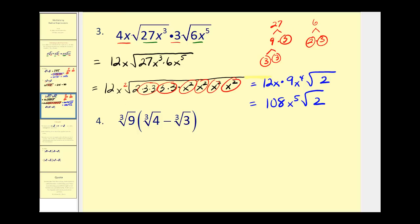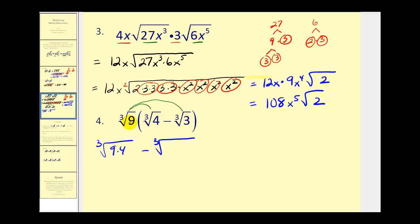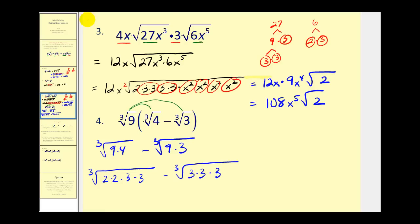Let's look at number four. Now we're going to have to distribute, but the rules stay the same. Notice all the coefficients are one, so we just need to multiply the radicands together. We're going to have the cube root of 9 times 4 minus the cube root of 9 times 3. Let's rewrite in prime factored form. 4 is 2 times 2, and 9 is 3 times 3. For the second term: 9 is 3 times 3, and then we have another factor of 3. The first cube root doesn't simplify, but the second does — there are three factors of 3. So we get the cube root of 36 minus 3.